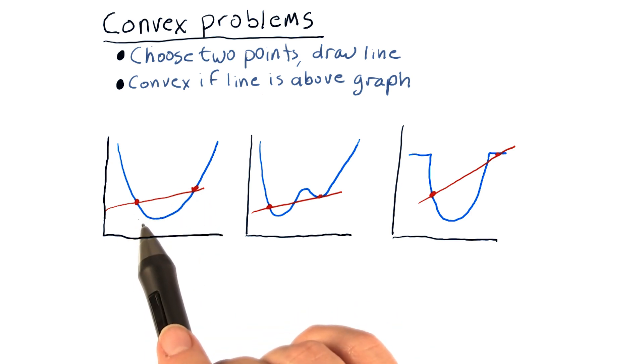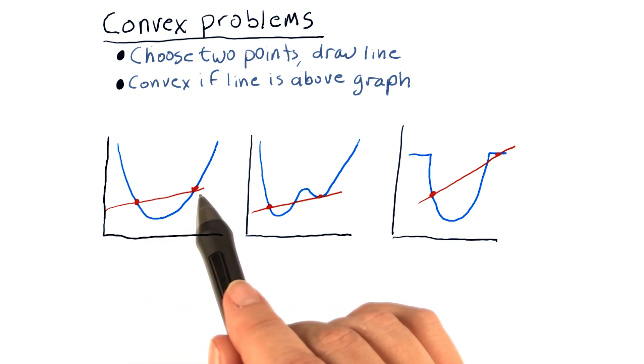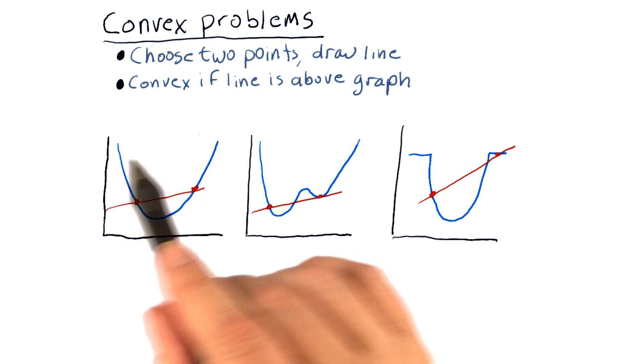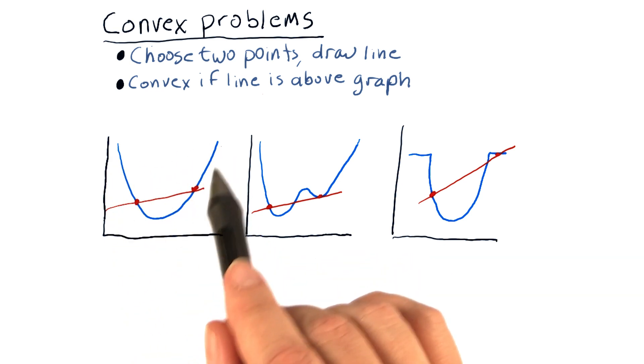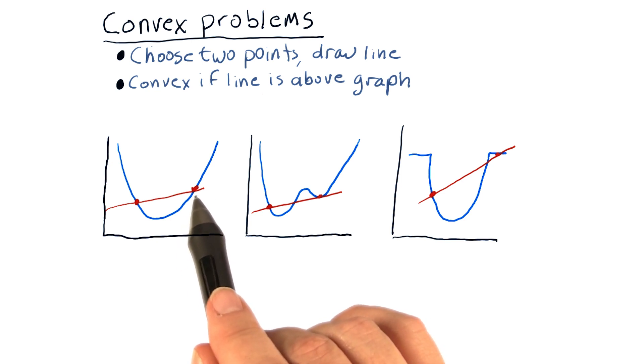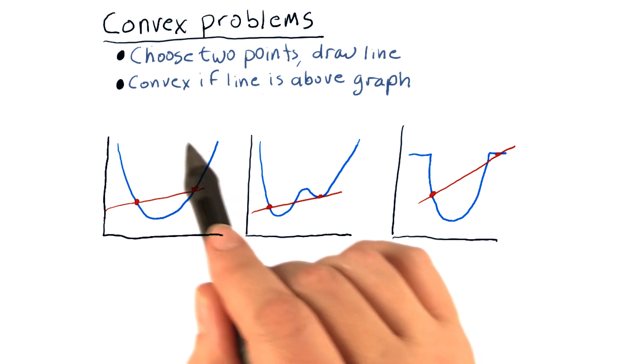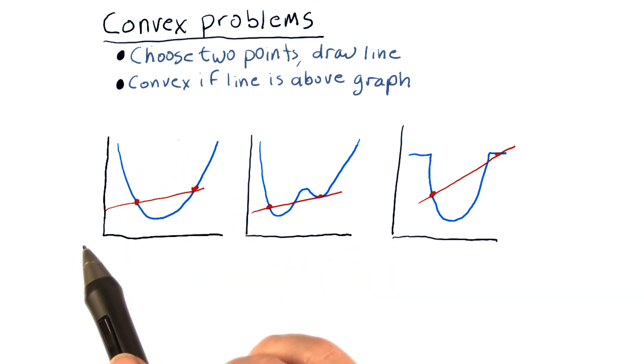So for this function, yes, it's convex because the line is above the graph everywhere. In fact, any two points you choose on this graph will have that property. So this function is convex everywhere, at least where we're looking at it.